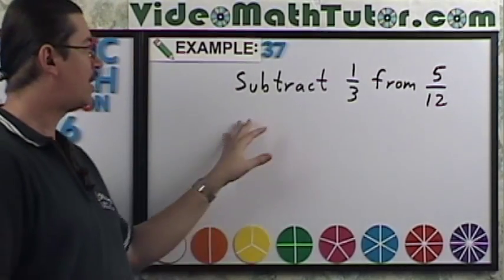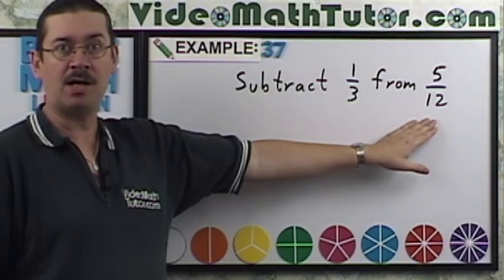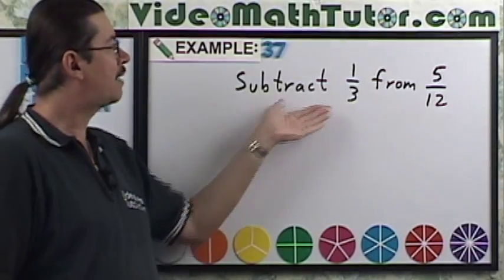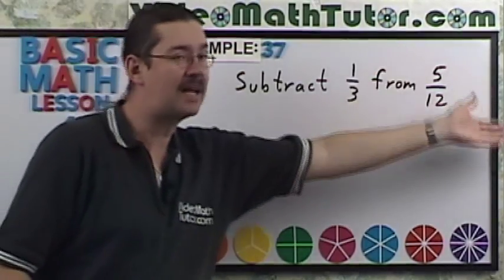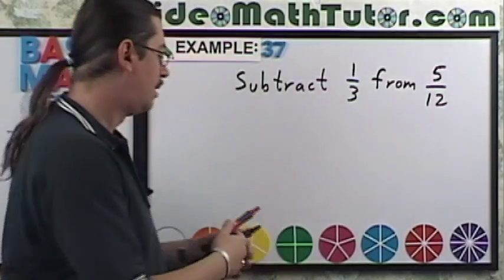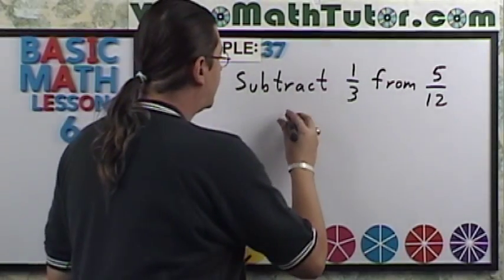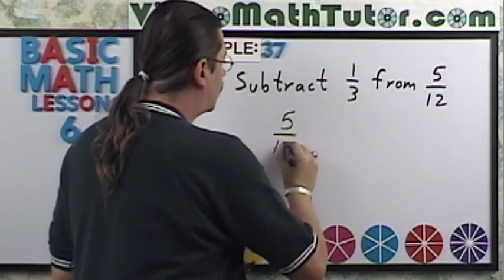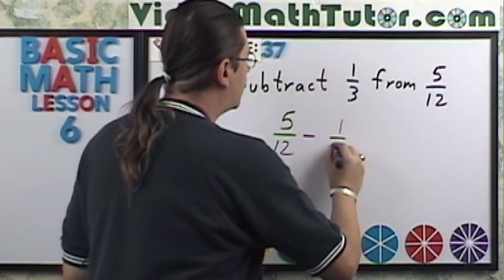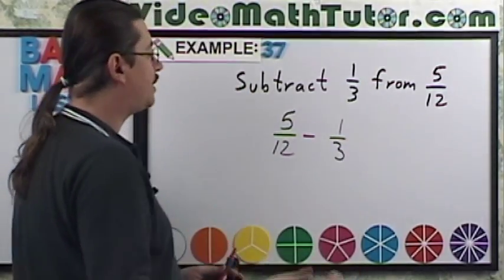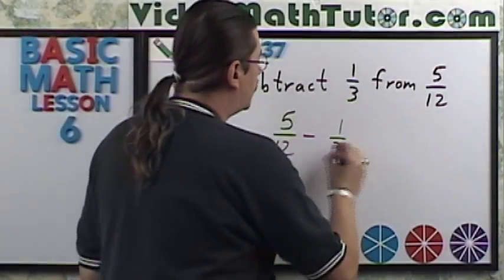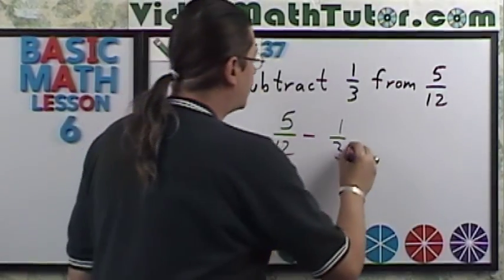For example, problem 37: I want to subtract a third from 5 and 1/12. Remember, whenever you have subtract from something, this is actually the second part. It switches around. So let's rewrite this as 5 and 1/12 minus a third. What's your LCD? Well, 3 is completely inside of 12, so actually 12 is going to be the answer.